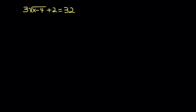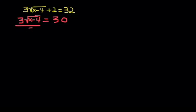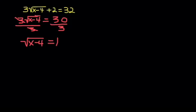Here's a problem that has a square root in it. As soon as I recognize this is a square root equation, I know I'm going to follow the steps and isolate the square root. I'll start by moving the plus 2 over to the other side of the equation, which subtracts from 32, leaving 30. I'm still not completely isolated because I have a 3 in front of the square root, so I'm going to divide both sides by 3. That leaves me the square root of (x minus 4) equals 10.